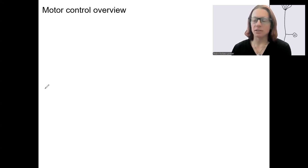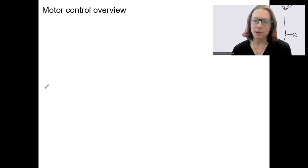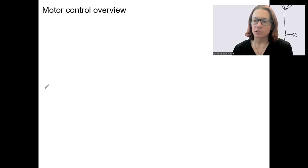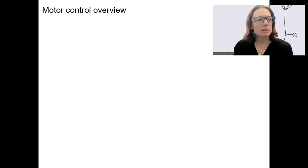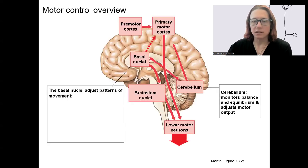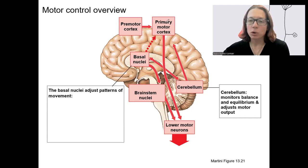We've done the sensory system already — the receptors and pathways. Now we're going to do motor control. I'm going to do an overview, then there are some pathways to look at, and then we'll put it all together. Some of this anatomy you've already seen. The motor cortex is where motion is initiated.